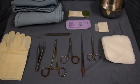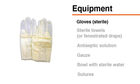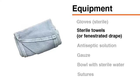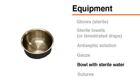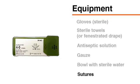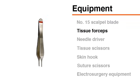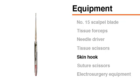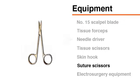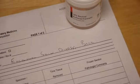Once the local anesthetic has been administered, gather the following items on a sterile tray: sterile gloves, sterile towels or a fenestrated drape, antiseptic solution such as chlorhexidine or povidone iodine, gauze, a bowl with sterile water, sutures including a non-absorbable monofilament suture for skin and an absorbable suture for deep tissue if needed, a number 15 scalpel blade and handle, toothed forceps (also called tissue forceps), a needle driver, tissue scissors such as Steven scissors, a skin hook, suture scissors such as iris scissors, and electrosurgery equipment if available. You will also need a specimen bottle and a pathology request form.